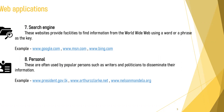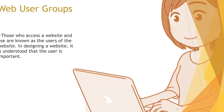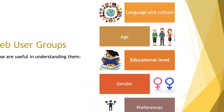So those are the types of web applications. There can be other types, or web applications that fall under many categories. Now let's look at web user groups. Those who access and use a website are known as the users of the website. When designing a website, it is important to understand the user. There are some parameters that are useful when understanding your web user groups.